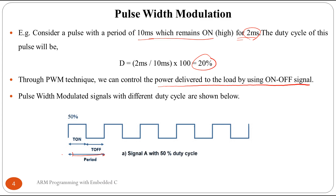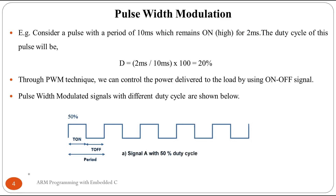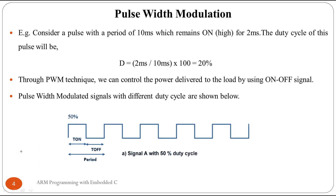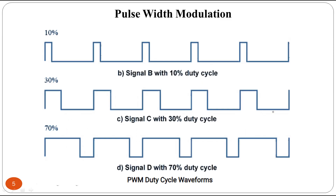Through PWM technique we can control the power delivered to the load by using an on-off signal. If we change this on and off cycle we can control the power delivered to the load. For example, if you want to control the speed of a DC motor, this is possible with the help of PWM. Here we have a first signal with 50 percent duty cycle — meaning 50 percent on time and 50 percent off time. The next signal has 10 percent duty cycle, meaning it will be on for only 10 percent of the period.